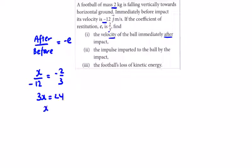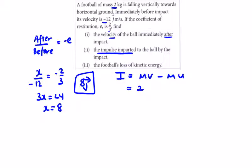So x equals 8, meaning 8j is the velocity afterwards. The impulse imparted on the ball - impulse is the change in mass times velocity, so mv minus mu. The mass is 2, the velocity afterwards is 8.